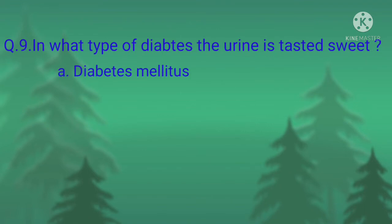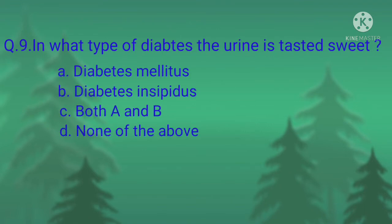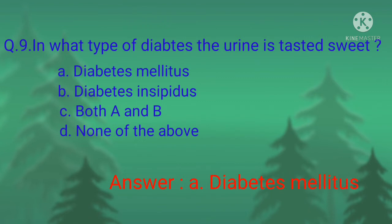Question number nine: in what type of diabetes is the urine tested sweet? Option A, diabetes mellitus; option B, diabetes insipidus; option C, both A and B; option D, none of the above. The correct option is option A, diabetes mellitus. In diabetes insipidus, the urine is tasteless. Diabetes mellitus is characterized by polyuria, polydipsia, and weight loss.